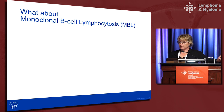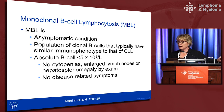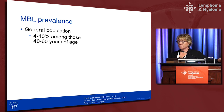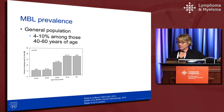Monoclonal B-cell lymphocytosis, or MBL, is an asymptomatic condition involving a clonal population of B-cells with an immunophenotype similar to CLL, but with an absolute B-cell count less than 5×10⁹ cells per liter — above that threshold is CLL. MBL is quite common: prevalence is 4–10% among those aged 40–60, increases with age, and reaches 18% in those over 80 years.